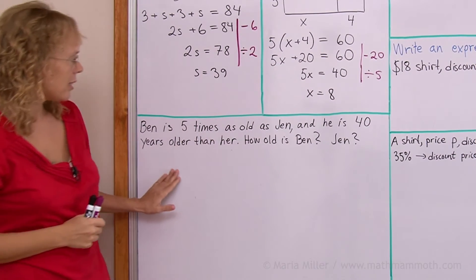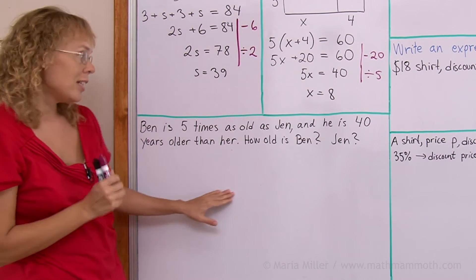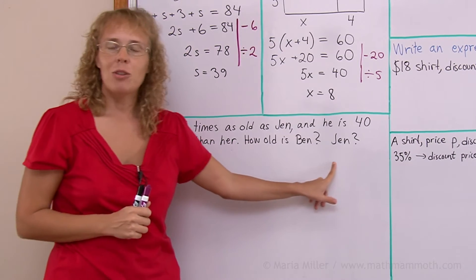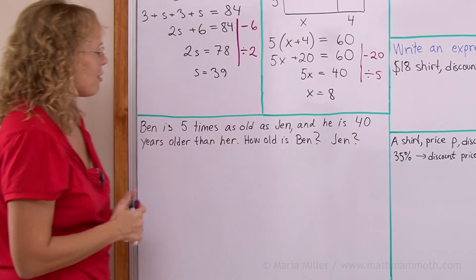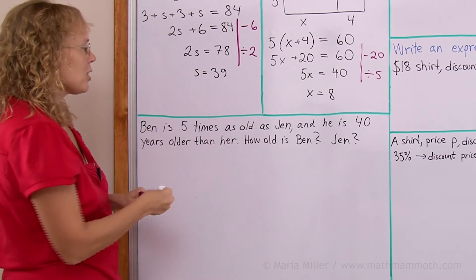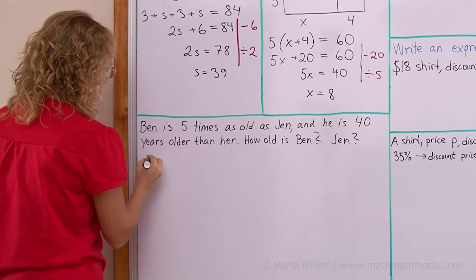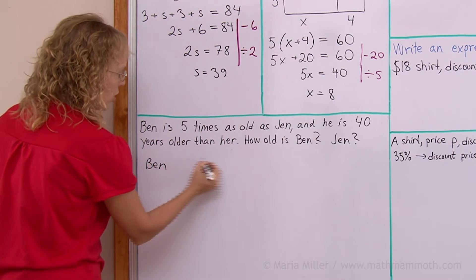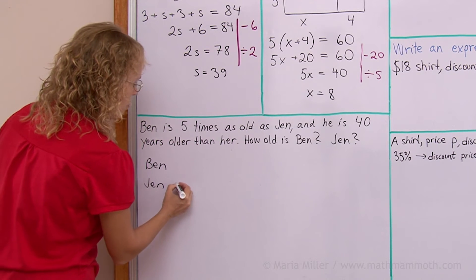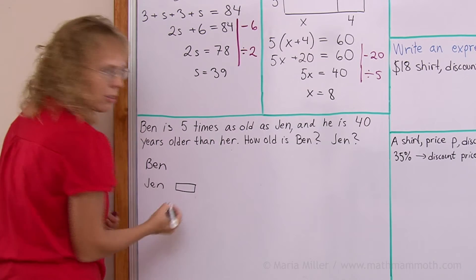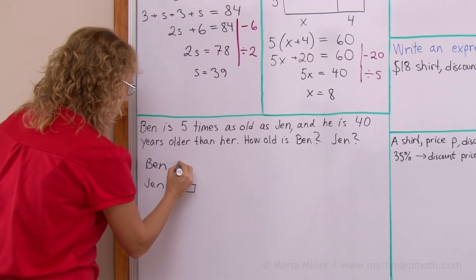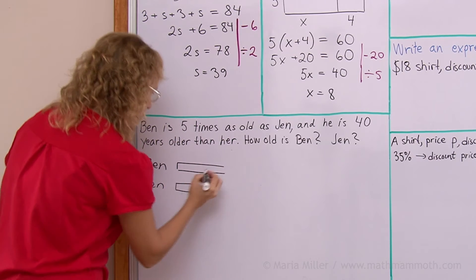Now, here. Ben is 5 times as old as Jen. And he is 40 years older than her. How old is Ben and how old is Jen? I'm gonna, first of all, draw a bar diagram for this problem. Ben is 5 times as old as Jen. So let's say Ben's age is gonna be like a bar. And Jen's age is gonna be like a bar too. But I'm gonna make Jen's age to be like a short bar here. And then Ben's 5 times that long.